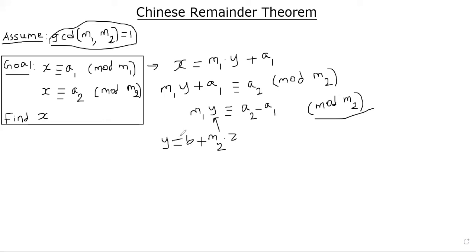So just to make it clear, if b is one solution to this congruence, we know that all other solutions are y equal to b plus M2 times z for some z. Z is some integer.